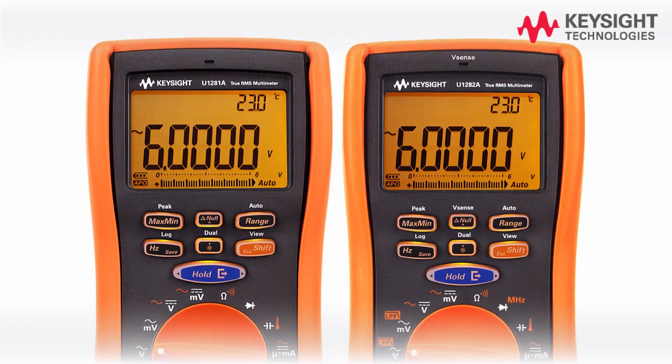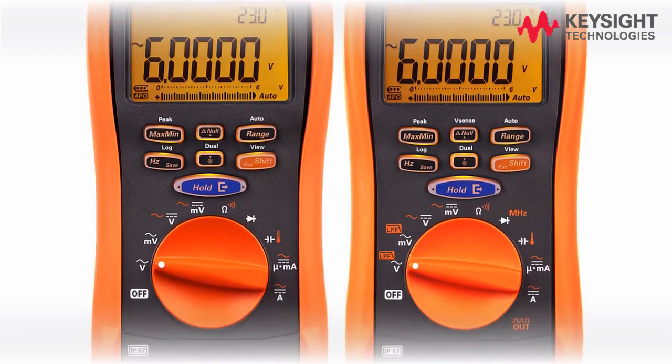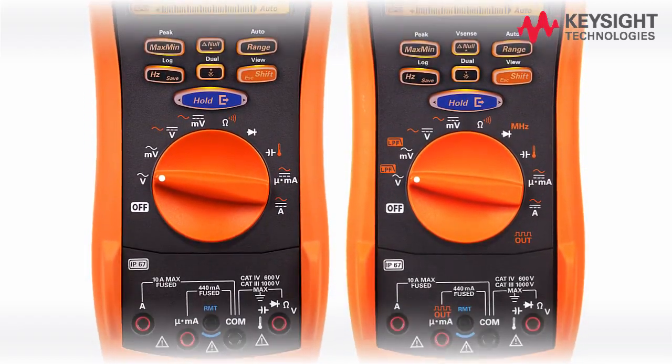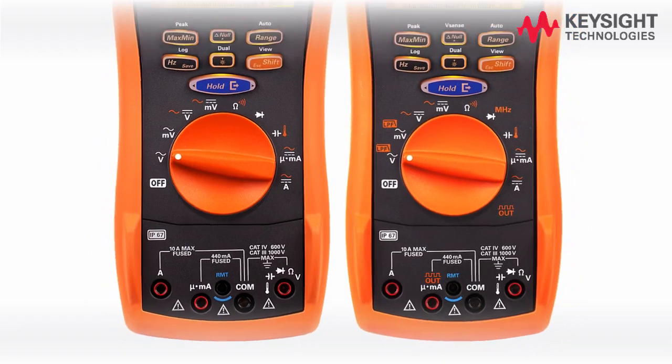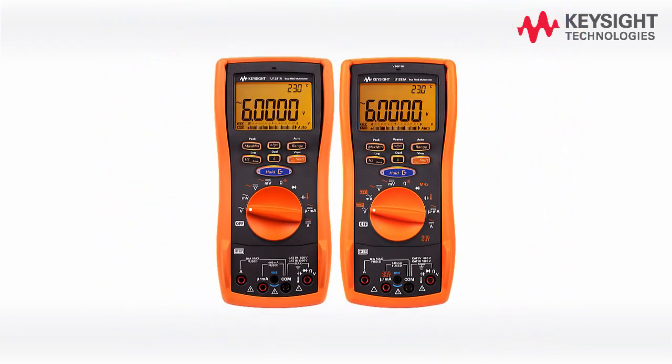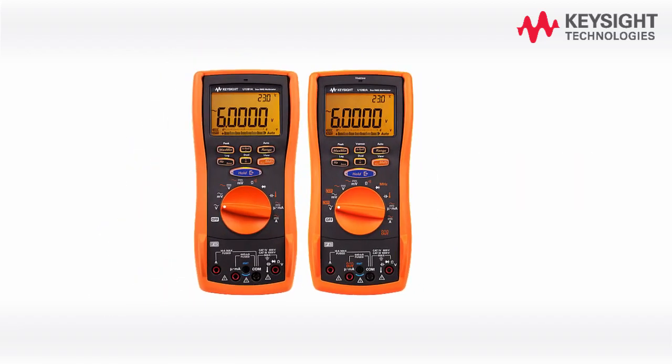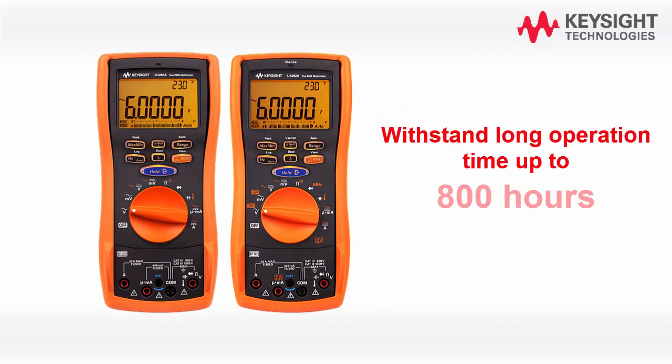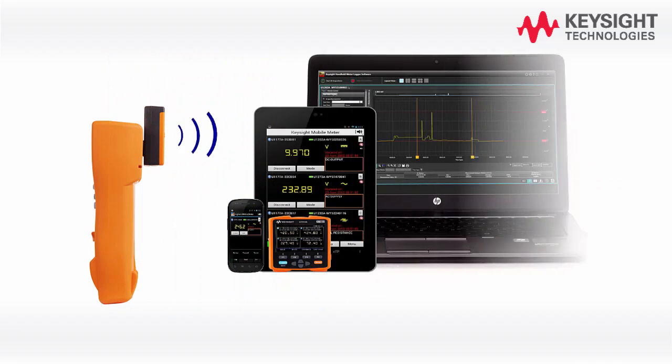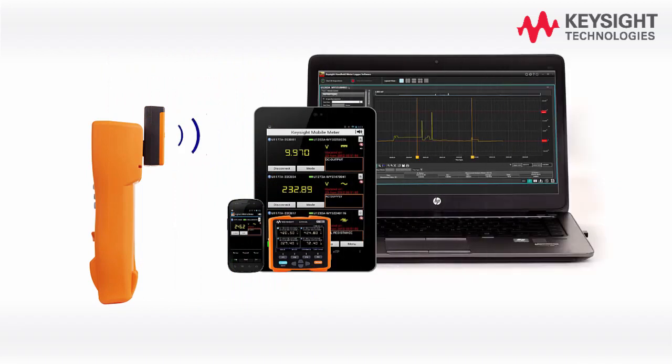Welcome to Keysight U1281A/U1282A handheld digital multimeter quick start video. The U1281A/U1282A four and a half digit handheld digital multimeter is rugged and durable with IP67 ratings, able to withstand long operation time up to 800 hours and allows you to make remote measurement via PC or smart devices.